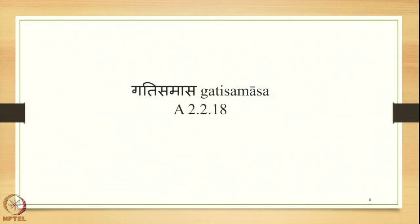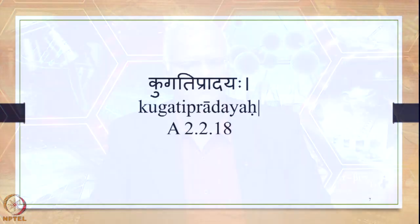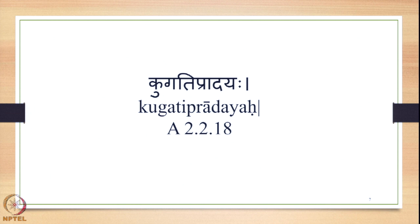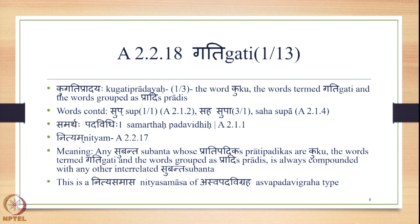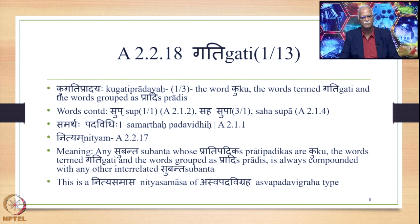We have seen several sub-types of the Tatpurusha Samasa — namely the Vibhakti Tatpurusha, the Karmadharaya Tatpurusha, and the Pradi Samasa. We are now studying the Gati Samasa. The Sutras treating the Pradi Samasa and the Gati Samasa are the same, namely Kugatip Pradayaha 2.2.18. We have already studied the Pradi Samasa and the Samasa that applies to Ku. Now we shall study in this lecture the Samasa of Gati.